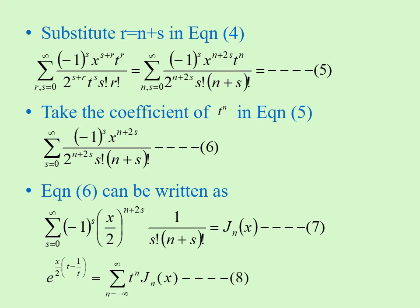We take the substitution r is equal to n plus s, so the summation becomes: s factorial times n plus s factorial. Now taking the coefficient of t power n in the above equation, we get summation s is equal to 0 to infinity of minus 1 whole power s times x power n plus s, divided by 2 power n plus 2s times s factorial times n plus s factorial. This can be written as summation s is equal to 0 to infinity of minus 1 whole power s times x by 2 whole power n plus 2s, times 1 divided by s factorial times n plus s factorial.